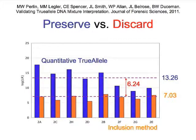This wasn't just that one case. In a paper with the New York State lab coming out in JFS, we showed on the same eight cases that the average match score using quantitative TrueAllele was about 10 to the 13th, whereas the reported CPI value was 10 to the 7th. So we now expect to get about a million-to-one improvement in match score on cases where labs can produce a result.